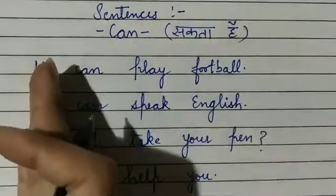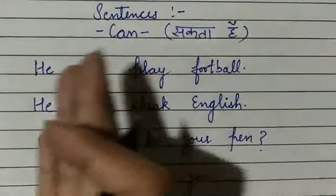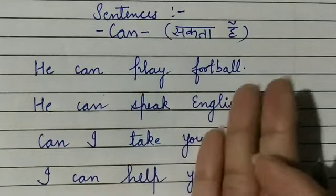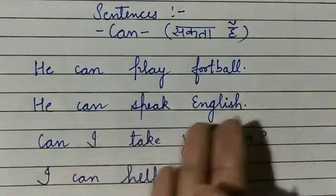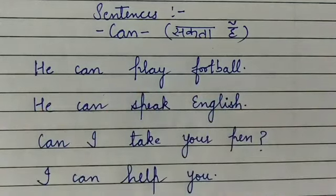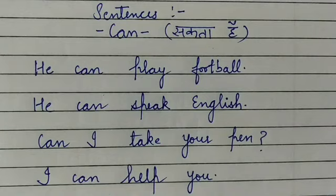Can means 'sakta hai'. He can play football — 'Woh football khel sakta hai'. He can speak English. Can I take your pen? — 'Kya main tumhari pen le sakta hoon?' 'Main tumhari madad kar sakta hoon' — I can help you. 'Main khel sakta hoon' — I can play. 'Main gaa sakta hoon' — I can sing a song. There are many such sentences which we speak in a day.